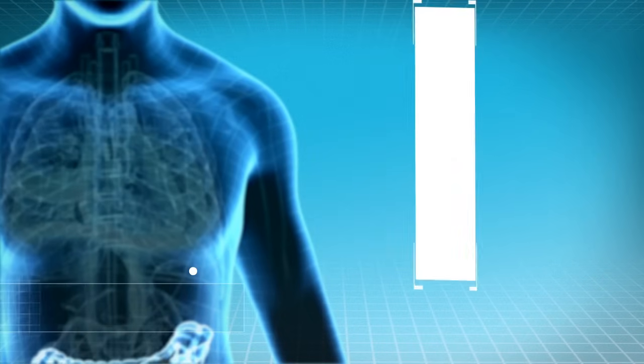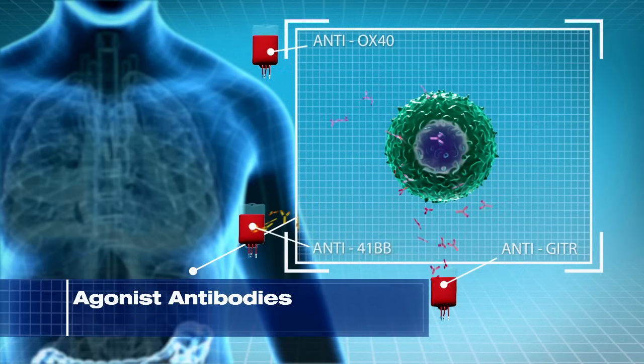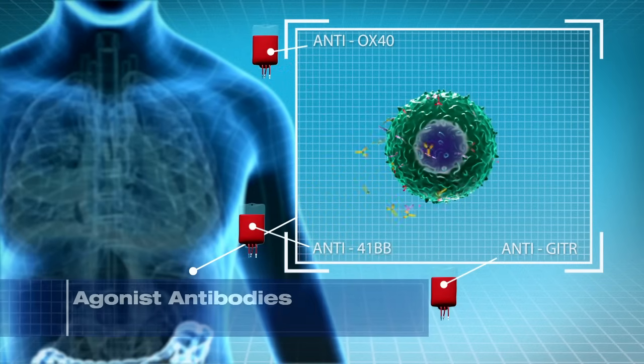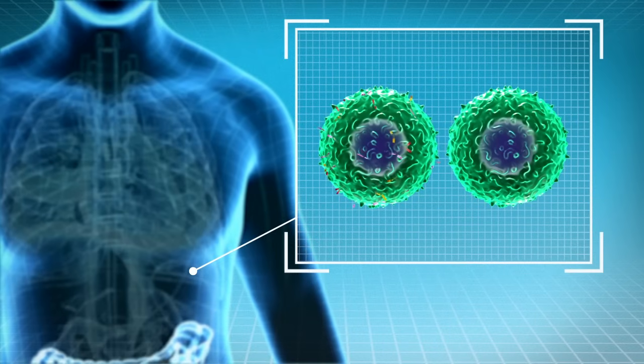A fourth enhancement approach uses agonist antibodies such as anti-OX40, anti-GITR, and anti-41BB, and others, to cause the T cells to grow and strengthen. This allows the enhanced T cell to overwhelm the cancer cells.